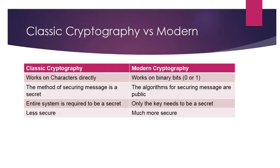In classic cryptography, as you saw with Caesar shift ciphers, Vigenère coding and similar techniques, they work directly on the characters of the message that needs to be encrypted. For example, in the Caesar cipher, if the message is 'cat', the work done to encrypt that message and create a secret message is performed on the characters themselves — c, a, t.